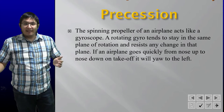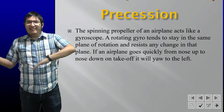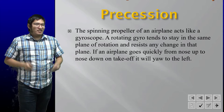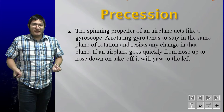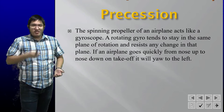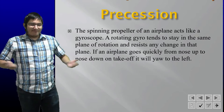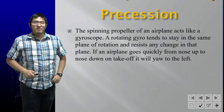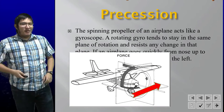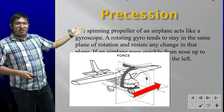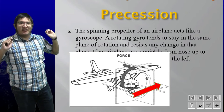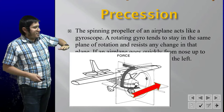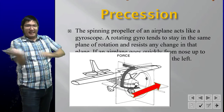Since the force is now acting 90 degrees in the direction of rotation — to the right of the aircraft instead of at the top — this causes a left-turning tendency. Gyroscopic precession is weird. For this course, you mainly need to know the 90-degrees-down-the-direction-of-rotation rule. My instructor basically described it as magic.